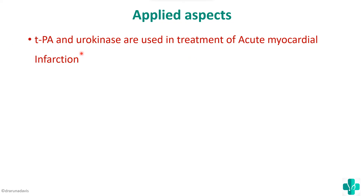Always complete your answer with an applied aspect. TPA and urokinase are used for the treatment of acute myocardial infarction. Since TPA and urokinase activate plasminogen to plasmin, which converts fibrin to fibrin degradation products, they can break down a thrombus causing an MI. This is the applied aspect of this topic.